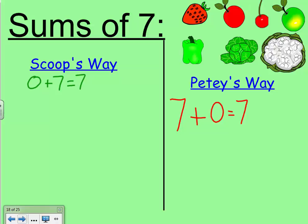I see it differently. So, Scoop sees 4 fruits and 3 vegetables. And those still make 7.